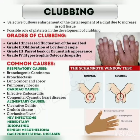Assalamu alaikum dear doctors. In this video I am discussing about clubbing. Clubbing is a selective bulbous enlargement of the distal segment of the digit due to increase in soft tissue. A possible role of platelets relates to the development of clubbing. Look at the image of a clubbing patient — we are noticing this selective bulbous enlargement of the distal segment on the image.